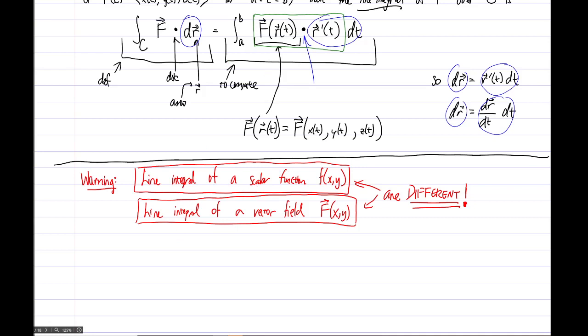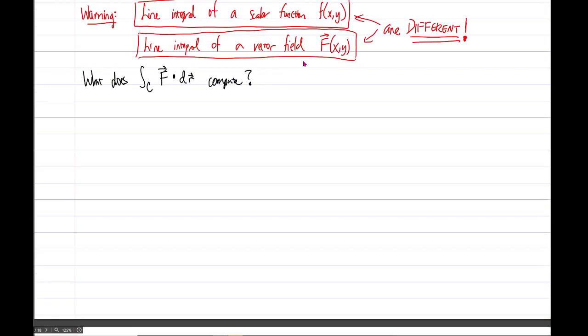Now, before we do some actual computations, let's actually answer what does the line integral over the curve or the line, some parameterized thing C, of vector field dot d vector r, what does this compute? So before we just dig into computations which will feel a little too meaningless, let's talk about this.